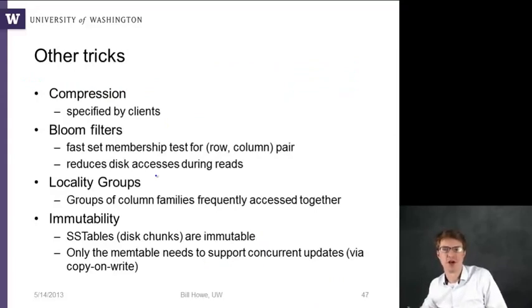So there are a host of other tricks here too where they can do various forms of compression, specified by the clients or some different ways of doing it. They use bloom filters to speed up existence tests. So if I give you a row ID, a column ID, and a timestamp and say find me this value, what these bloom filters allow you to do is to very quickly determine whether that does not exist in the system. So these bloom filter data structures are pretty cool and I'm going to walk through them in this course in a couple of weeks. So they help you quickly determine whether that key does not exist in the system and avoids disk accesses during reads.